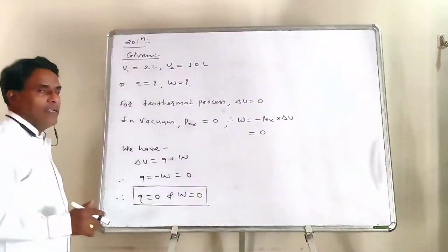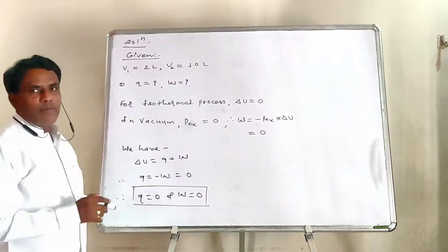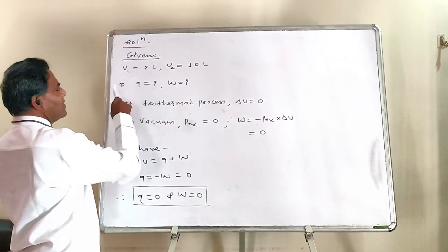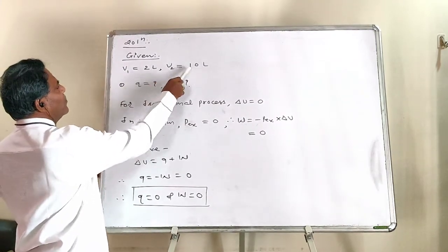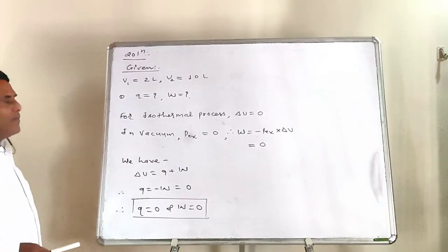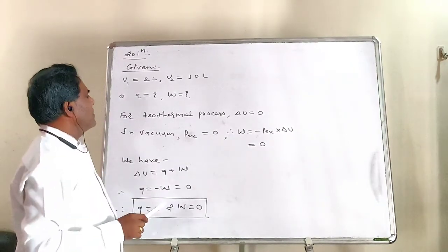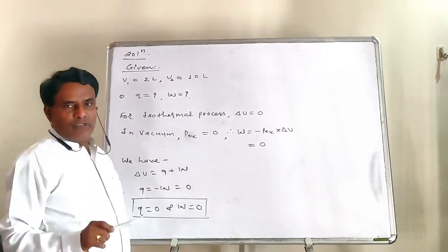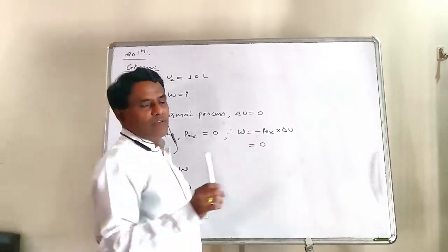Next problem. See what we have given in this problem. Initial volume of gas is V1, 2 liters, final volume V2, 10 liters, expansion. But gas expands in vacuum and it also expands isothermally. Two conditions we have to keep in mind.